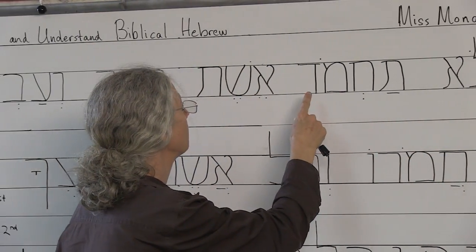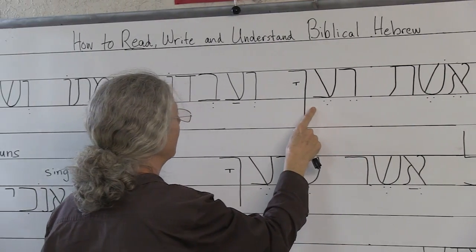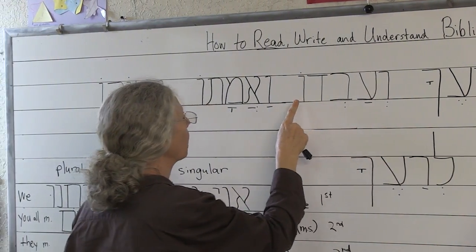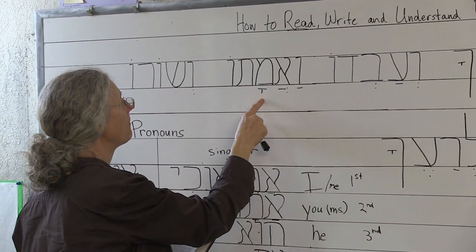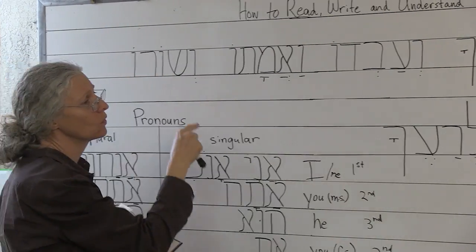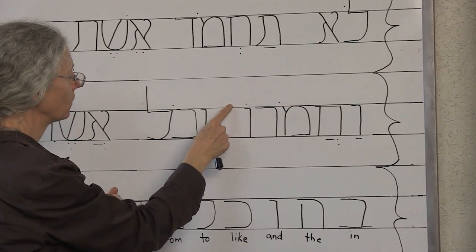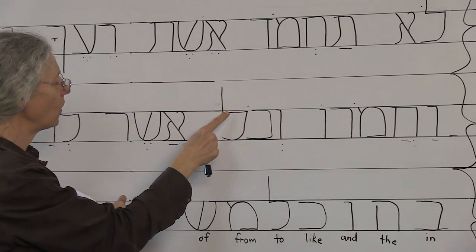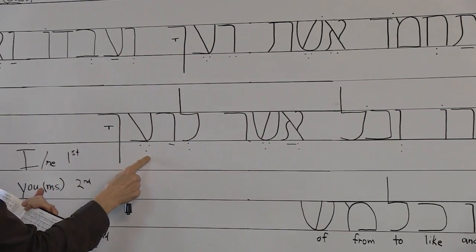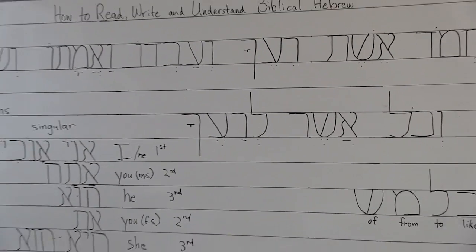Lo tach-mod eishet re-e-cha, ve-av-do, ve-a-ma-to, ve-shoron, ve-a-cha-mo-ro, ve-chol a-shor le-ra-e-cha. That's the part that you don't have.